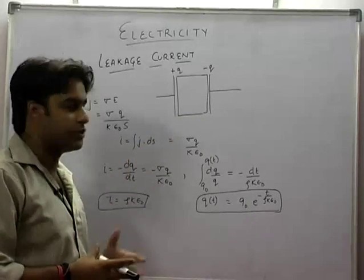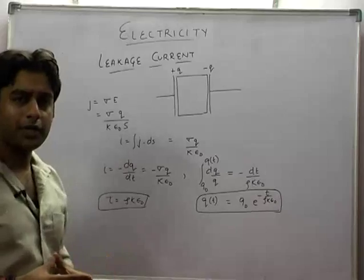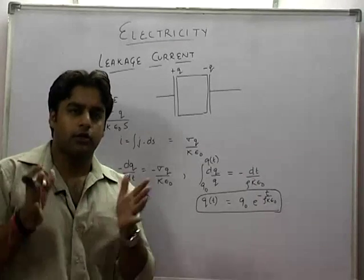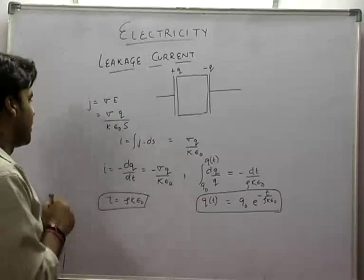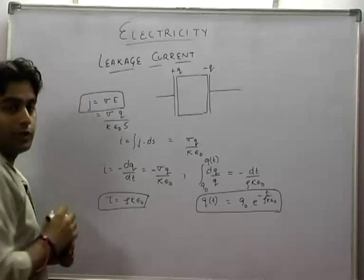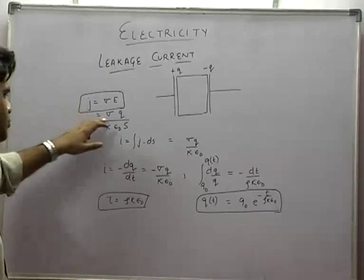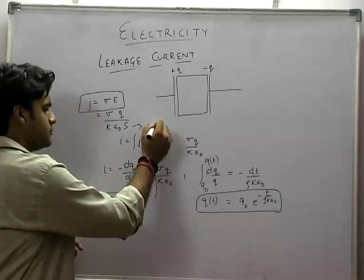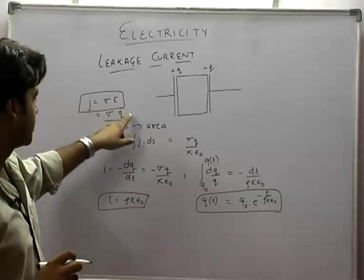In this case, if we add a dielectric, it is also a conductor. So we know this formula: the current density is equal to sigma into E. That will be equal to sigma Q upon K epsilon into S. S is the area, epsilon is the dielectric constant, and Q is the charge.